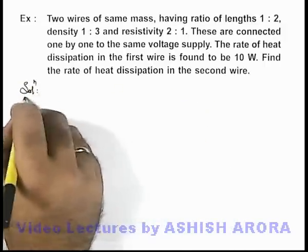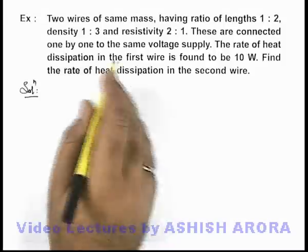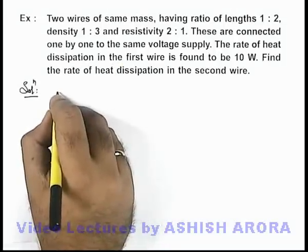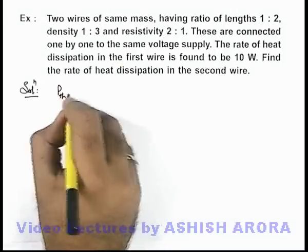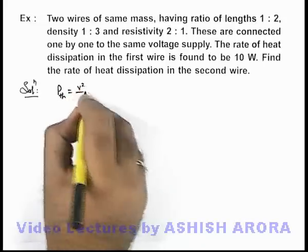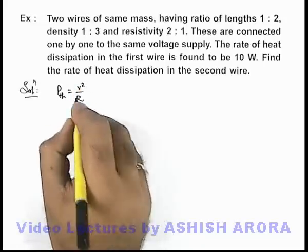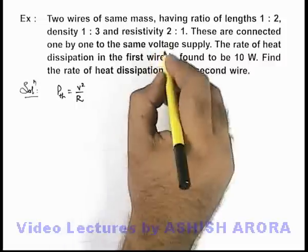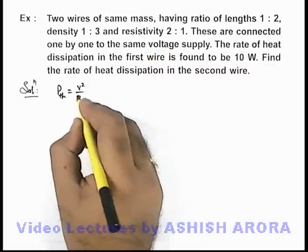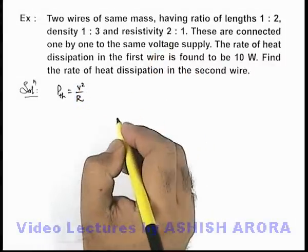When a given wire is connected to a voltage supply, we can write the thermal power or rate of heat dissipation as V squared by R. We'll take V squared by R because the voltage supply is same, so it will remain constant for both of these resistances.